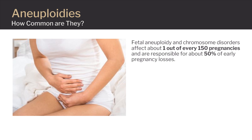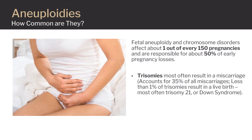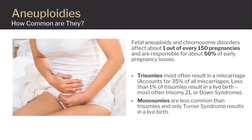Fetal aneuploidy and chromosome disorders affect about 1 out of every 150 pregnancies and are responsible for about 50% of early pregnancy losses. Having an extra copy or missing a copy of a chromosome can affect the outcome of a pregnancy. Trisomies most often result in a miscarriage; studies show that trisomies cause an estimated 35% of all miscarriages. Although rare, around 1% of trisomies result in a live birth, most often trisomy 21, or Down syndrome. Only one variation of monosomy — monosomy X, also known as Turner syndrome — results in a live birth.